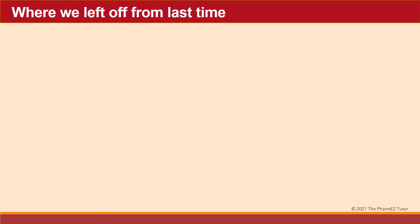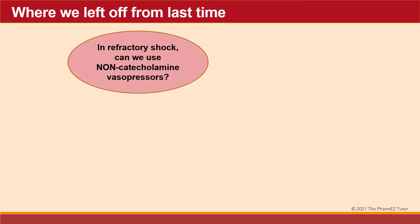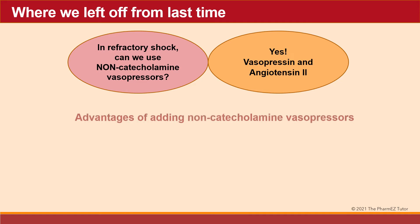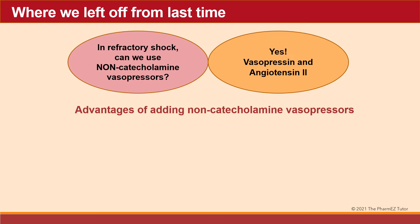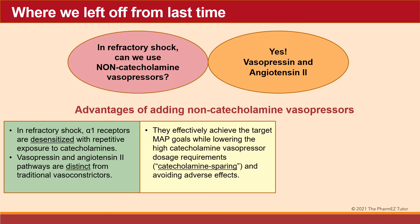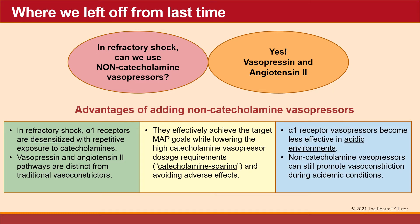We left off last time talking about what other agents we can use for refractory shock besides catecholamines — and yes, we can use vasopressin and angiotensin II. The advantages of these non-catecholamine vasopressors include: in refractory shock, alpha receptors become desensitized with repetitive catecholamine exposure. Vasopressin and angiotensin II use pathways distinct from traditional vasoconstrictors, achieving MAP goals while lowering catecholamine doses. Additionally, catecholamine vasopressors don't work well in acidic environments, while these two non-catecholamines will work in acidic conditions.